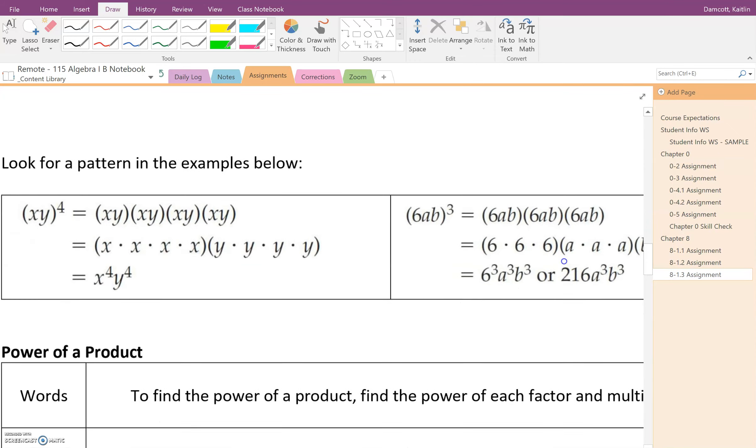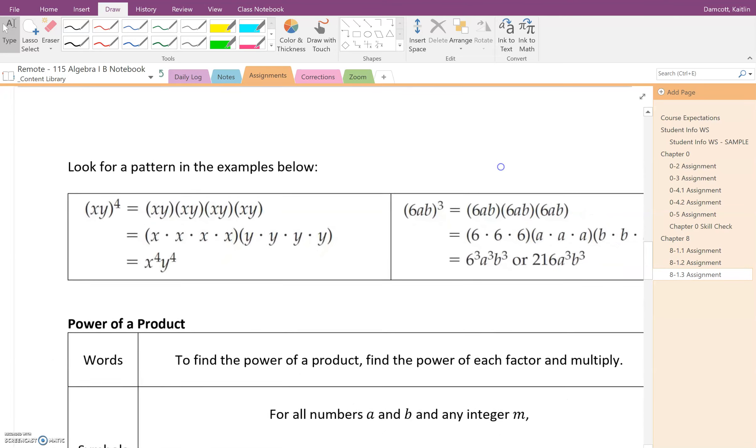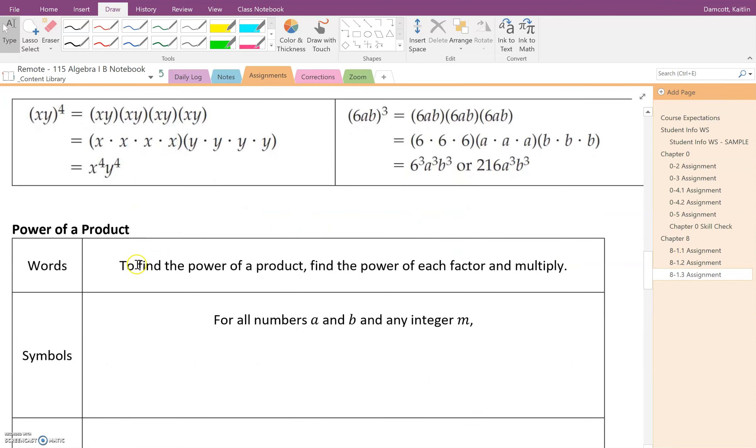So the pattern I hope that you're kind of seeing is that we are taking this exponent and we're distributing it to each variable, or in this case, we're going to distribute it to the number and to each variable. So in English, what I'm trying to describe to you is that to find the power of a product, you're going to find the power of each factor and then you're going to multiply.